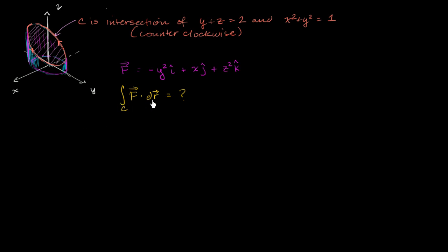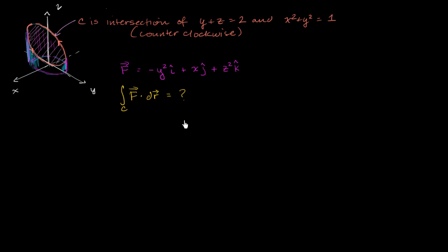In the last few videos, we evaluated this line integral for this path by using Stokes' Theorem, by essentially saying that it's equivalent to a surface integral of the curl of the vector field dotted with the surface. What I want to do in this video is to show that we didn't have to use Stokes' Theorem — that we could have just evaluated this line integral directly. Stokes' Theorem is valuable because sometimes if you're faced with a line integral, it's simpler to evaluate the surface integral, and vice versa.